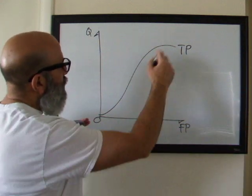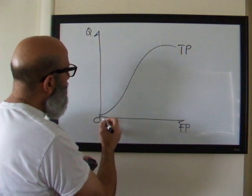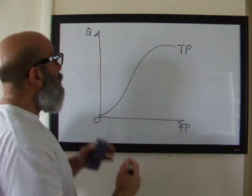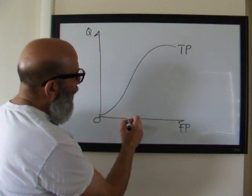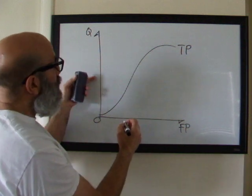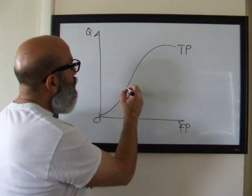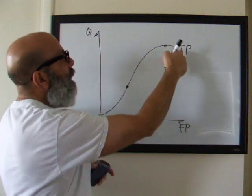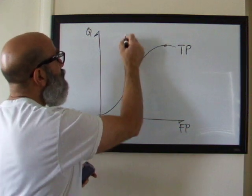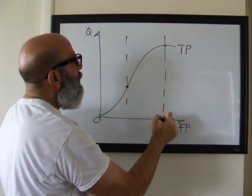So this measures all the output. If we have zero factors of production, zero inputs, we're going to have zero quantity, zero output. It kind of says as we add factors of production, we produce more output. In the first video for total product, it says that we divide this total product schedule into kind of three zones, kind of like this.